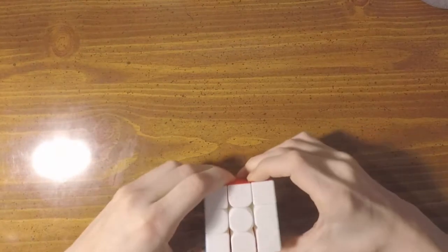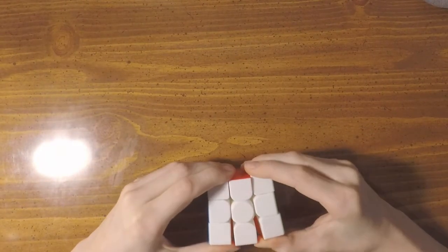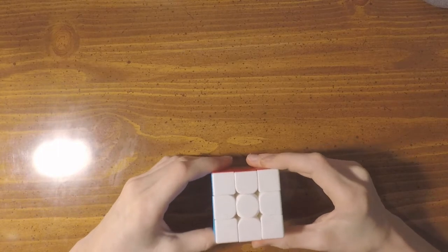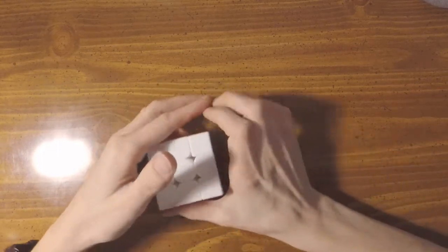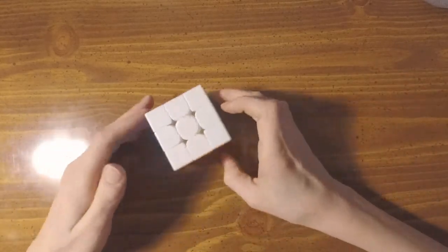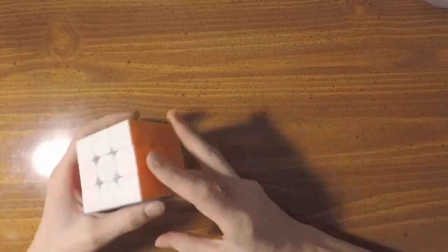Hey, this is Ultimate Cubing, and today we're going to be doing a review of the MFJS Meilong 3x3. This cube is, I think it's $4 at the cubicle normally, but as I'm making this video, it's actually for sale for $3, so if you want to get this, then that would be a good time to get it.